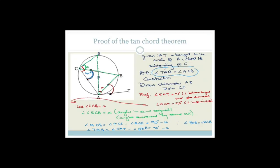That was quite a long theorem. You need to be very careful that you do your constructions correctly — show that the diameter goes through the center of the circle and reaches the circumference. Please, when drawing constructions, use rulers and pencil. If you make a mistake, use an eraser. If you drew a skew line in pen and crossed it out, that is terrible. Please draw constructions in pencil using a ruler, and erase anything incorrect.